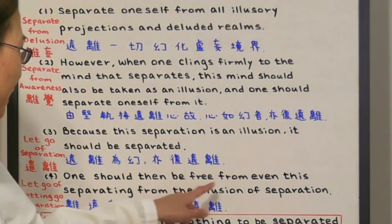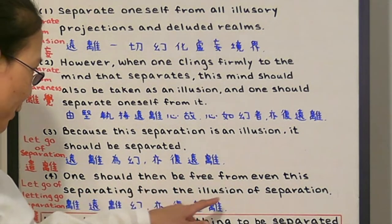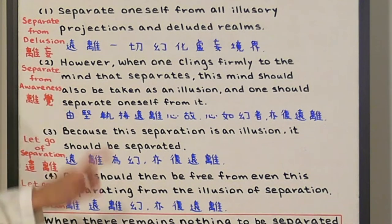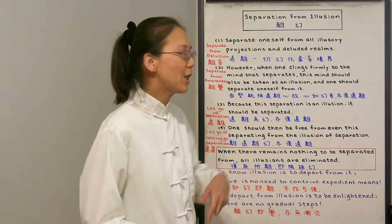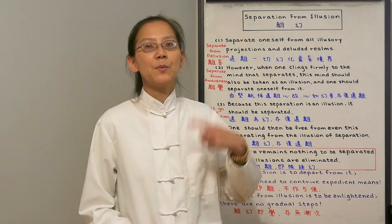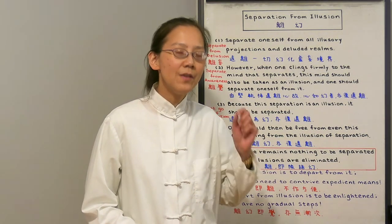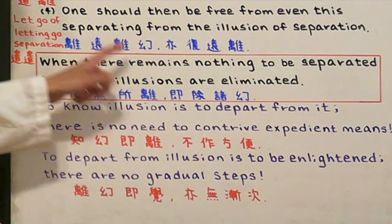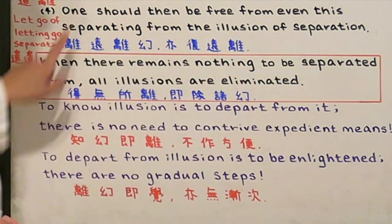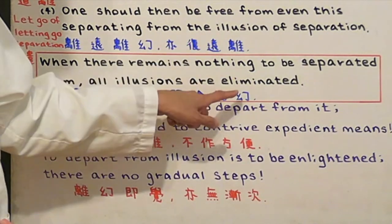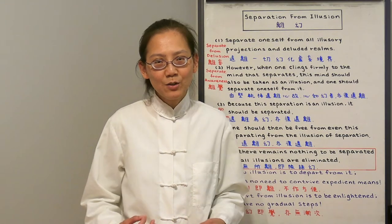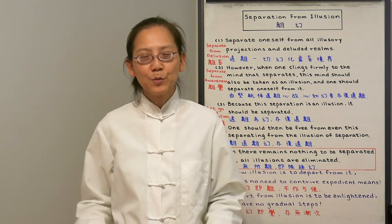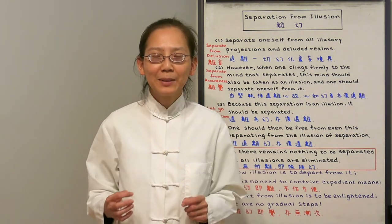Step 4: One should then be free from even the separating from the illusion of separation. All the separation above should be separated — let go of separating or separation from illusion. Every last bit of attachment should be let go. In conclusion, when there remains nothing to be separated from, all illusions are eliminated. When all illusions are extinguished, perfect enlightenment remains unmoved. That is the real, complete enlightenment.